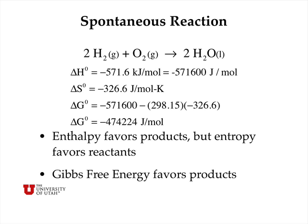For the spontaneous reaction of two moles of hydrogen plus oxygen giving two moles of liquid water, delta H is minus 571,600 joules per mole, and delta S is minus 326.6 joules per mole per kelvin. So delta G equals delta H minus T delta S, which calculates to minus 474,224 joules per mole. Notice that enthalpy favors the formation of products, but entropy favors the formation of reactants. The two driving forces are opposite in direction, but the change in enthalpy is much larger, so Gibbs free energy overall favors the formation of products.